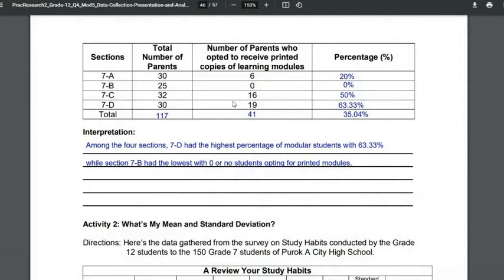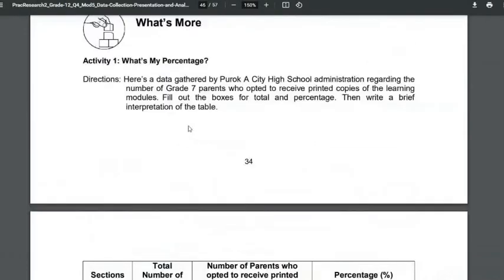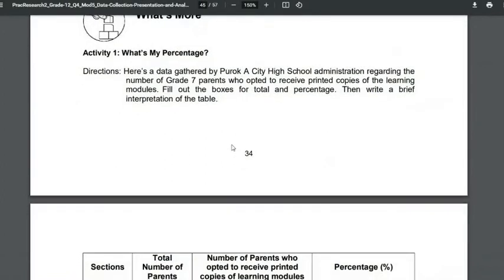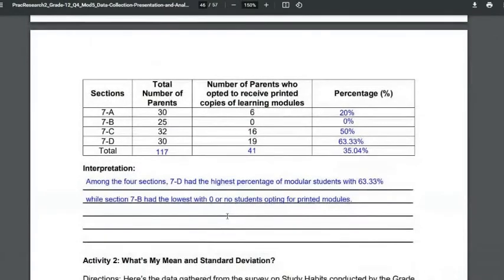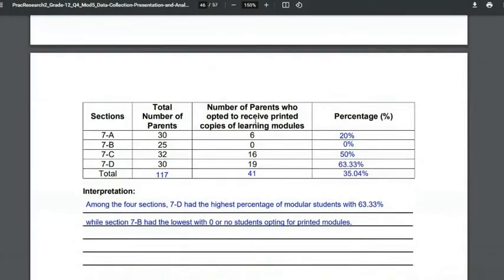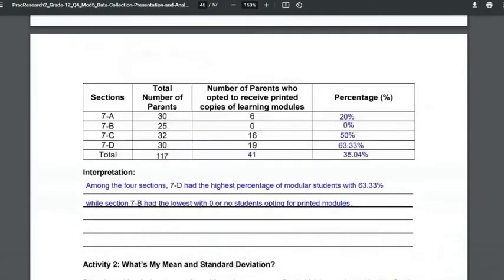Among the four sections, 7D had the highest percentage of modular students at 63.33%, while section 7B had the lowest with zero or no students opting for printed modules. So I just took the highlights. It's good to do the highlights when you have a lot of data, like imagine if the sections go up to five, ten, or however many. You can interpret it. Again, it depends on you. Write your own brief interpretation, so I just chose two for a short interpretation.